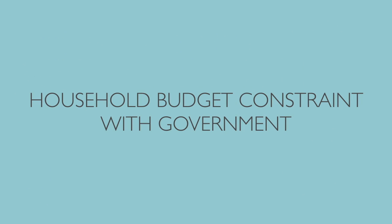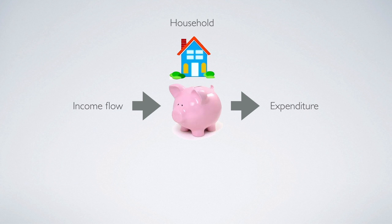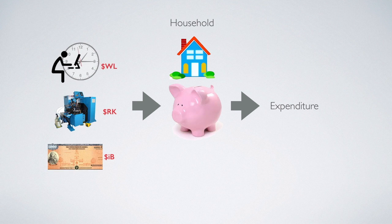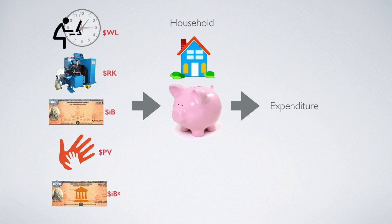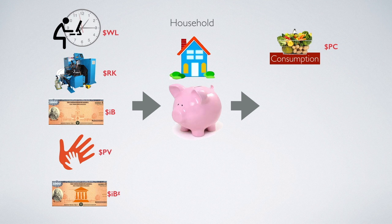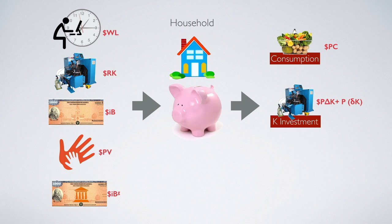Now we are going to modify the household budget constraint when government exists. Remember the household budget constraint comes from income flow equaling expenditure. The income flow comes from three parts: labor income, capital rental income, and interest payment from private bonds. But now with government, there will be two extra sources of income. The first is the transfer payment that government gives back to the household, which is P times V. The fifth source is the interest payment from government due to the household's ownership of government bonds.